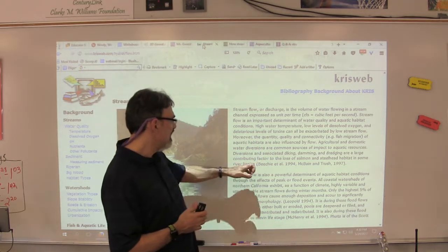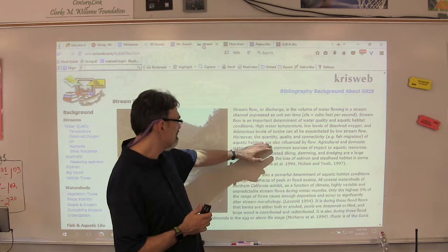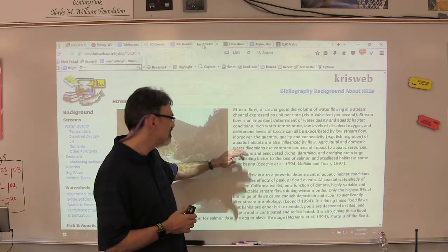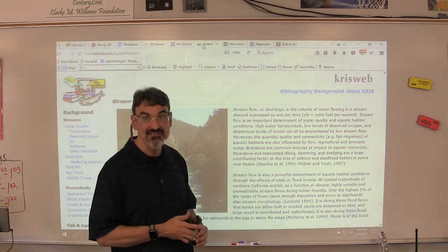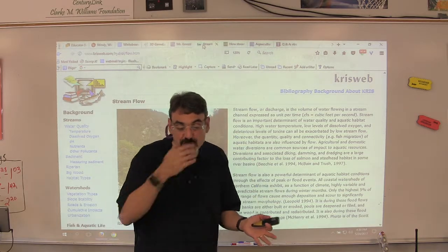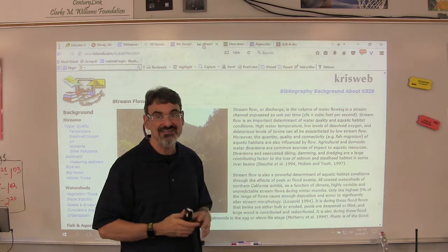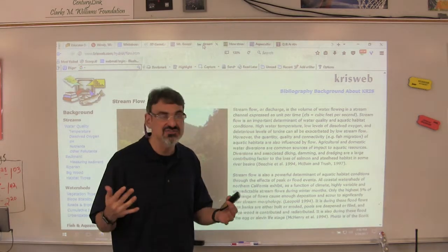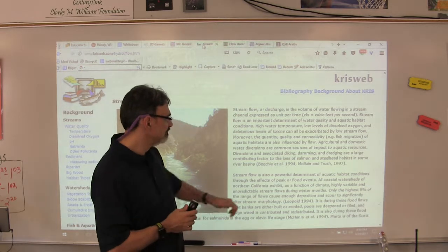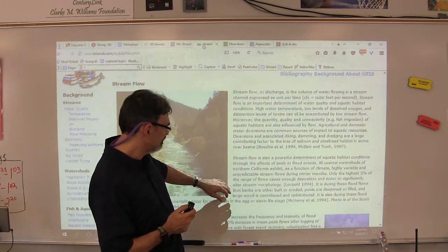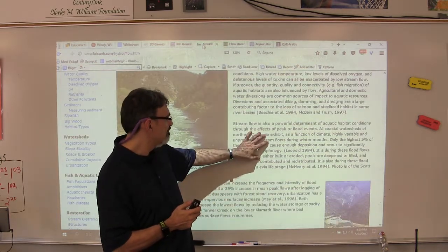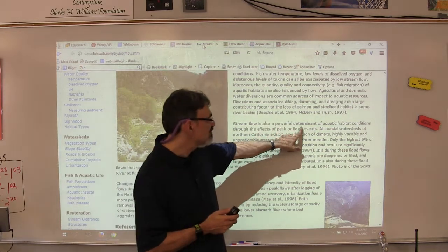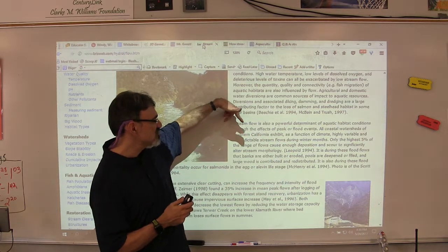The quantity, quality, and connectivity of aquatic habitats are influenced by stream flow. If you straighten it out, it's flowing too fast. There's not much habitat there, not much place for even the bugs to survive. Stream flow is also a powerful determinant of aquatic habitat conditions through the effects of peak flood events.